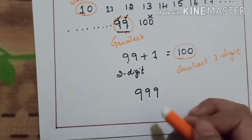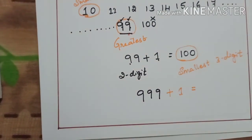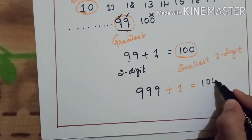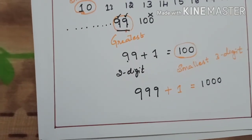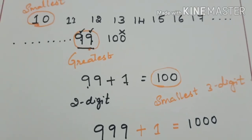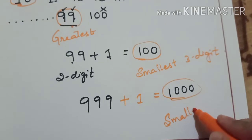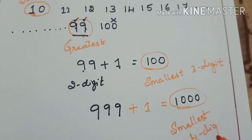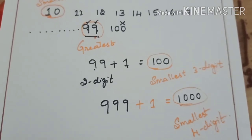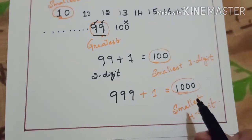When you add plus 1 to this greatest 3-digit number, 999, you will get the smallest 4-digit number. So the smallest 4-digit number is 1000. Like this we can find out the smallest and greatest numbers.